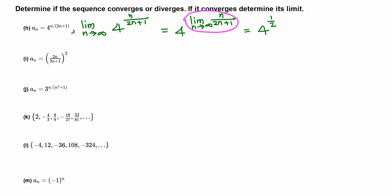Something raised to 1 half is the same as a square root, and the square root of 4 is 2. So the limit of this sequence an is 2. That means this sequence converges to 2.